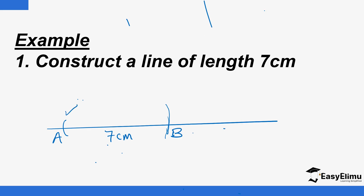You start by marking A, then draw the line using the ruler. Then mark one end A, measure seven centimetres, and make an arc on the other side using the pair of compasses. It's always important that you label it afterwards.